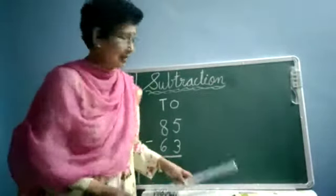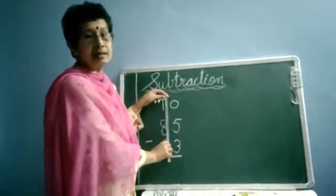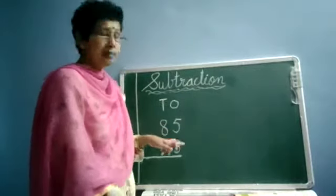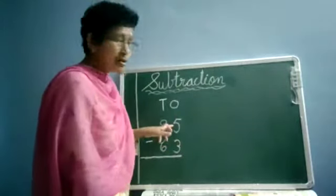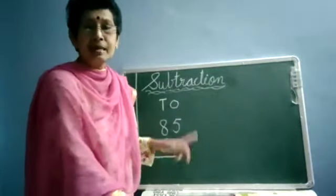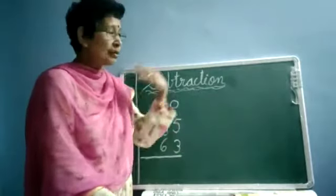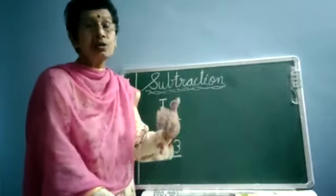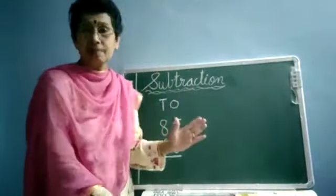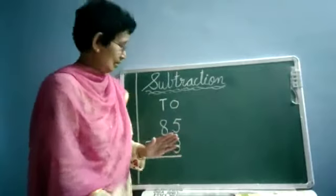Now when you are doing subtraction, always start from the ones side. Start from the ones side. When you are doing subtraction, again another thing: the bigger number should be written on top and the smaller number should be written down. In this case, you can do subtraction directly. You don't have to borrow from here and there. Borrowing we will do in the next class. So first we will do simple subtraction. You don't have to borrow directly, you can do subtraction.